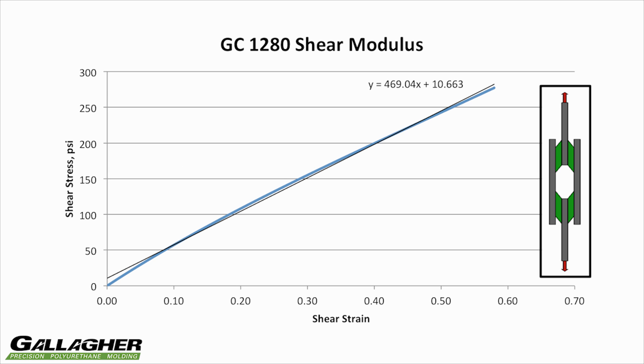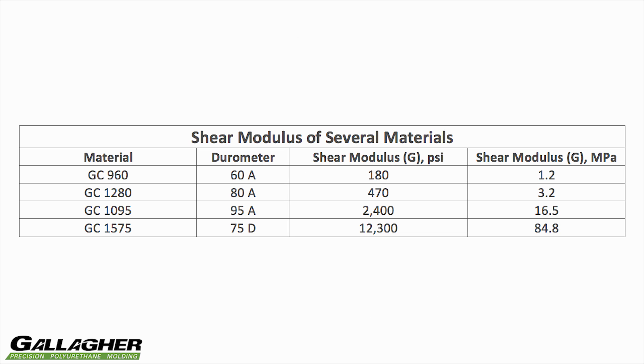This is the stress-strain curve for our test, with a line of best fit. The shear modulus is equal to the slope of this line, or approximately 470 psi.